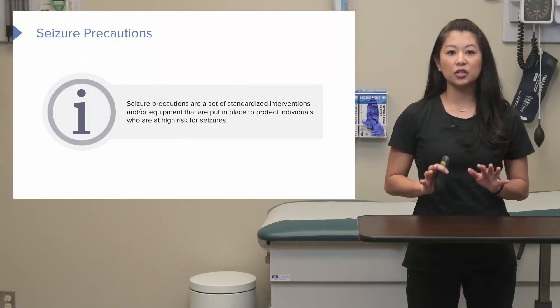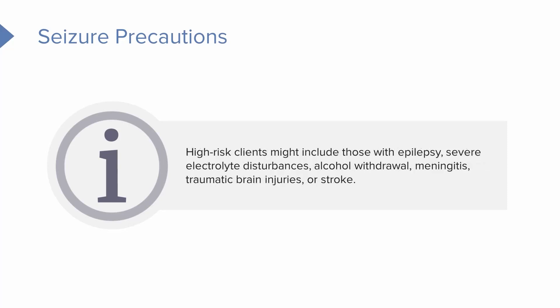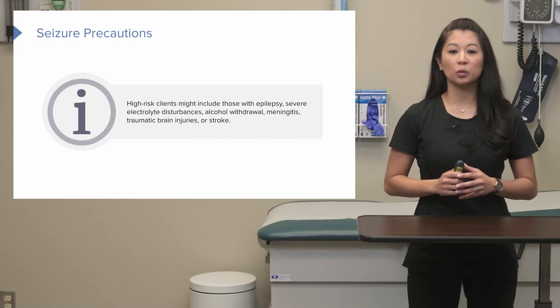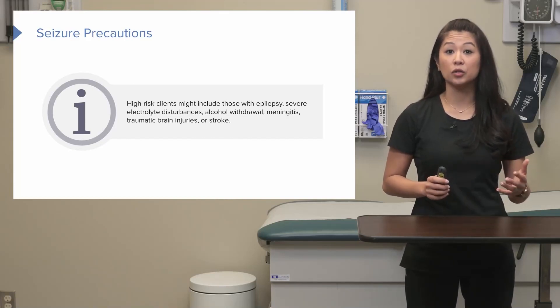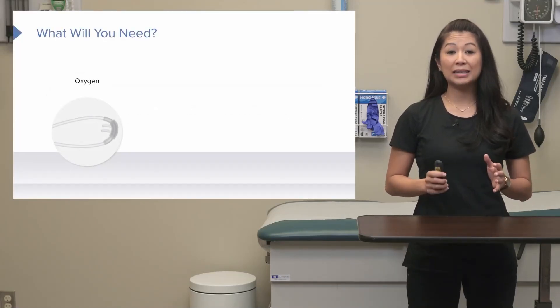When we're talking about seizure precautions, we are talking about a set of standardized nursing interventions or equipment that are put in place to protect individuals we are worried about having a seizure or who are high risk. This includes patients with a diagnosis of epilepsy — a specific seizure disorder — patients with severe electrolyte disturbances, those with alcohol withdrawal symptoms, those with meningitis, and patients with traumatic brain injuries and stroke.